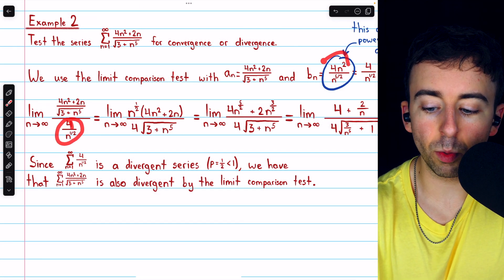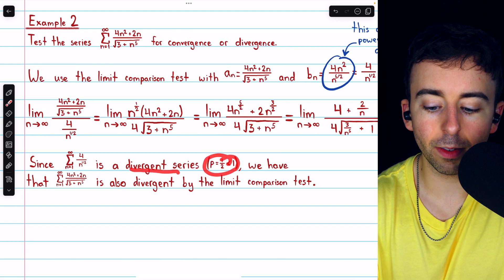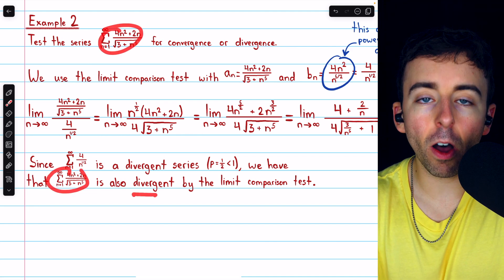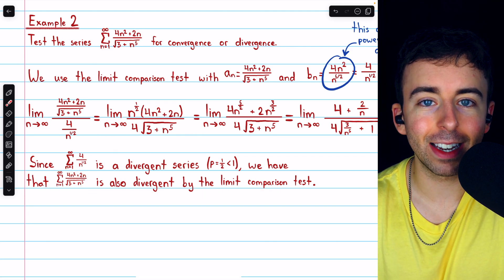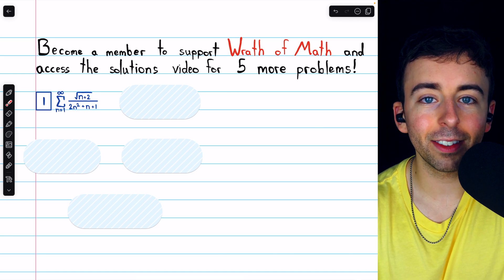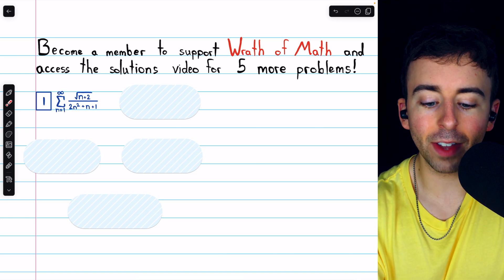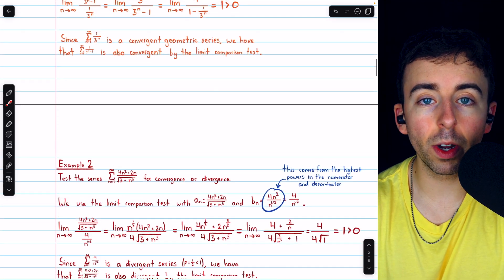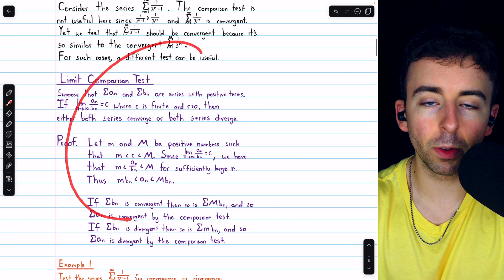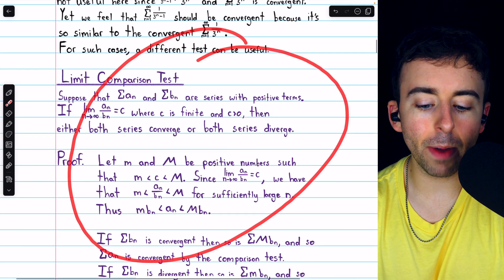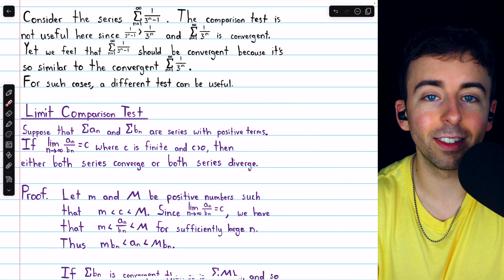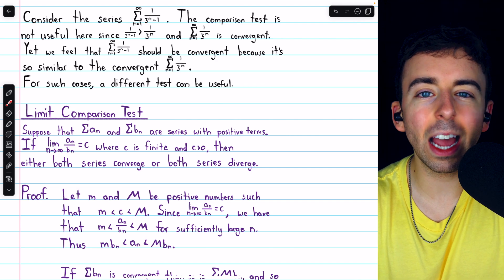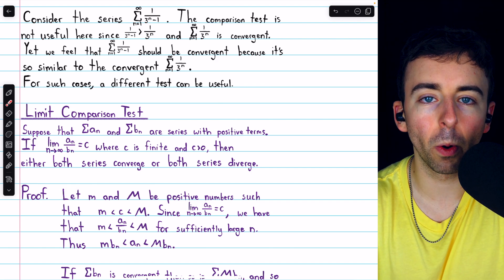Thus, since the series we compared to is a divergent p-series with p equal to 1 half, the original series must also be divergent by the limit comparison test. For more practice using the limit comparison test, consider joining Wrath of Math as a channel member — there's another video going over 5 more problems. Anyways, that's the limit comparison test: how to prove it, how to use it, and some nice examples. Let me know in the comments if you have any questions, and check out the Calculus 2 course and exercises playlists in the description for more.